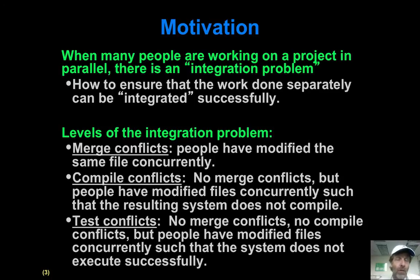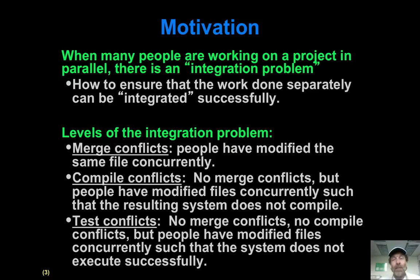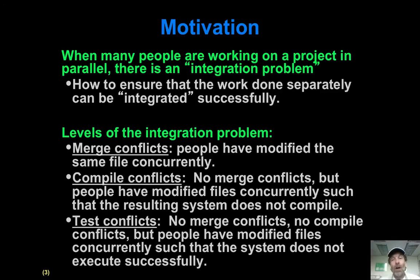There are several ways you can fail to integrate correctly. One potential cause of failure is when two people modify the same file and even maybe the same line — that's certainly going to be a problem when you try to integrate. Another problem could be that people don't even modify the same file, but they modify different files in such a way that the system no longer compiles. For example, you depend on method foo in another class, and then the person working on that other class renames or even deletes that method. All of a sudden, your code is broken because they've made a change to the class you depend upon.